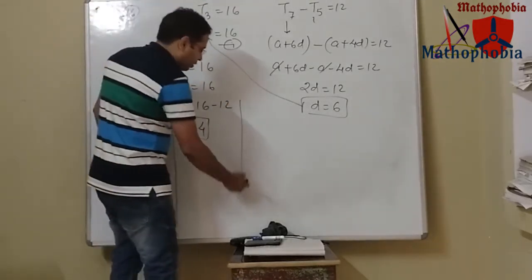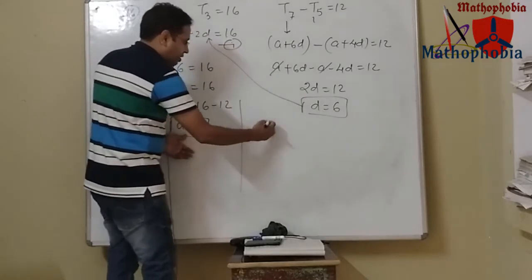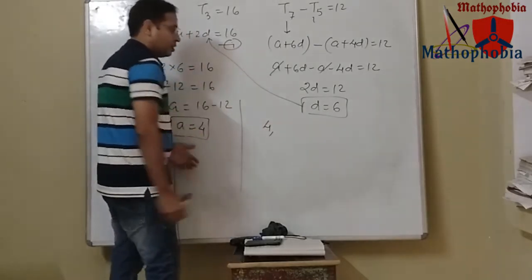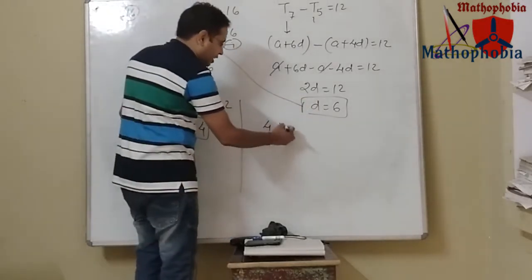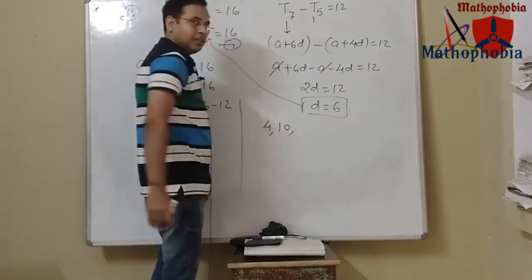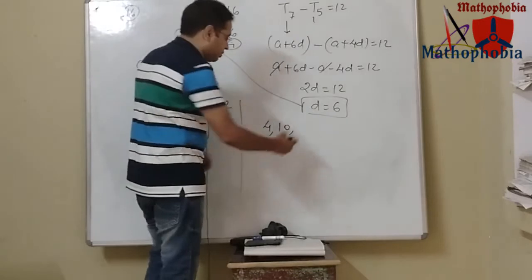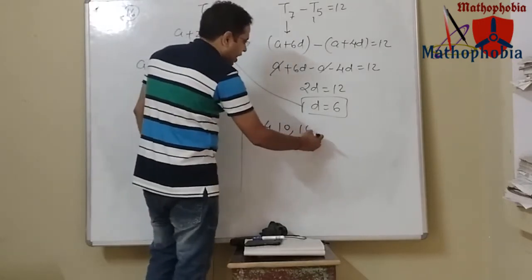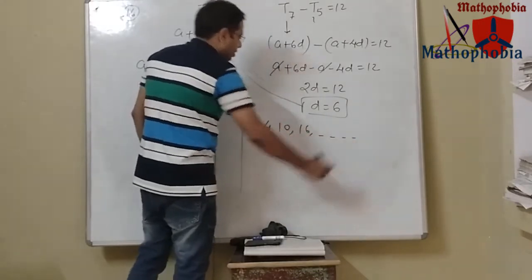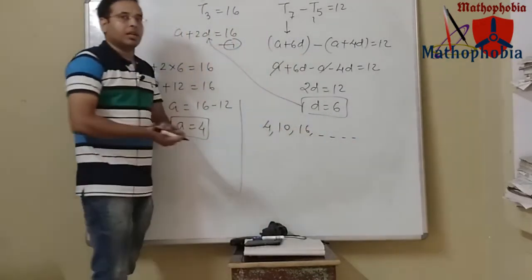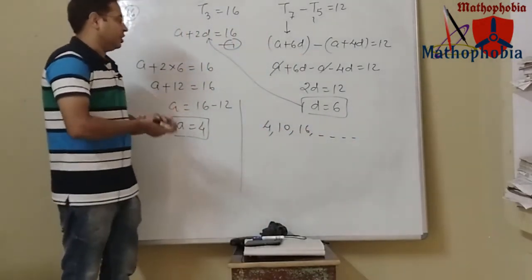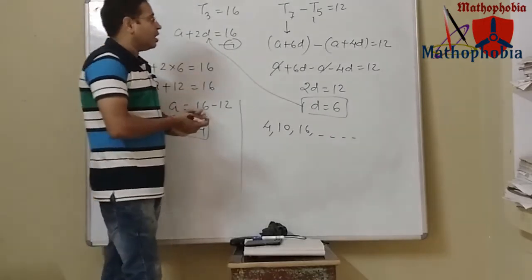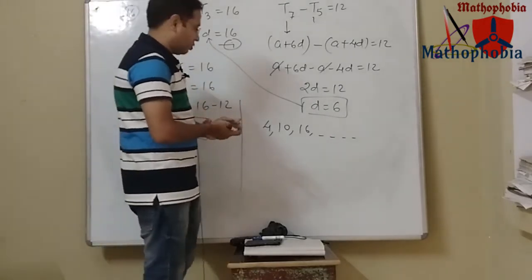Since the values a = 4 and d = 6 are known, the arithmetic progression will be 4, 10, 16, and so on. This is the required arithmetic progression.